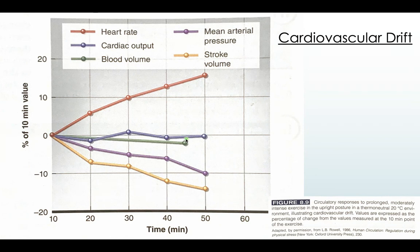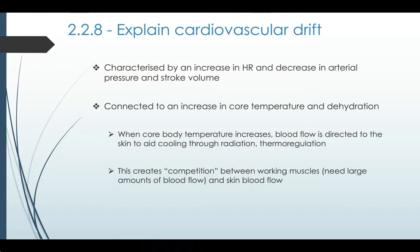The reason cardiac output doesn't increase despite heart rate going up is because stroke volume goes down, as does mean arterial pressure. On the graph, we can see that stroke volume and mean arterial pressure are reduced whilst heart rate increases.